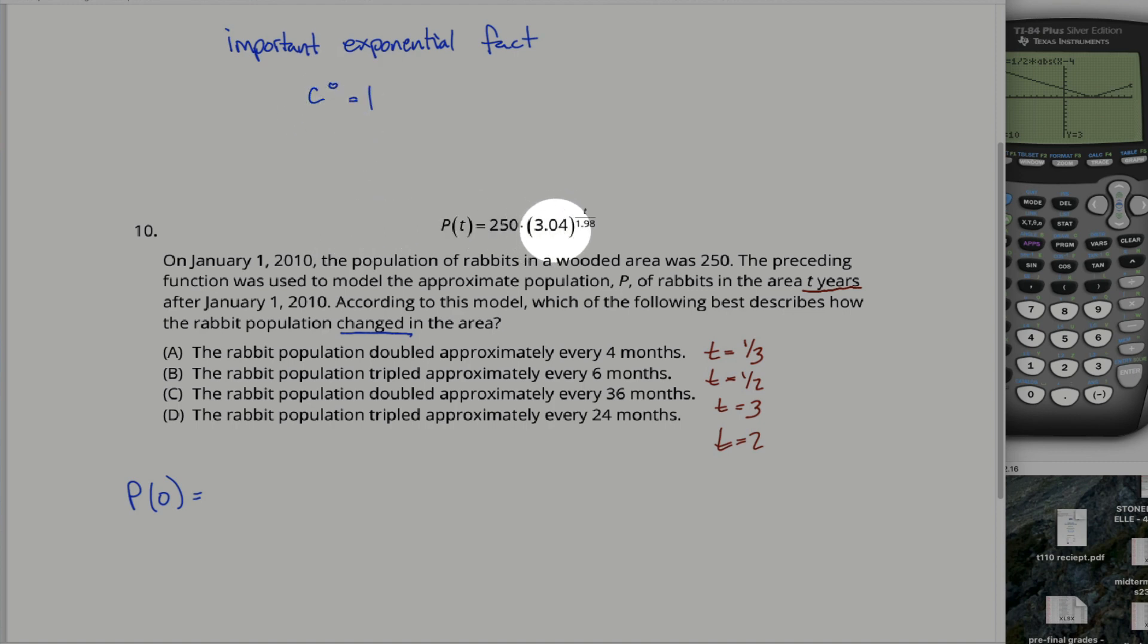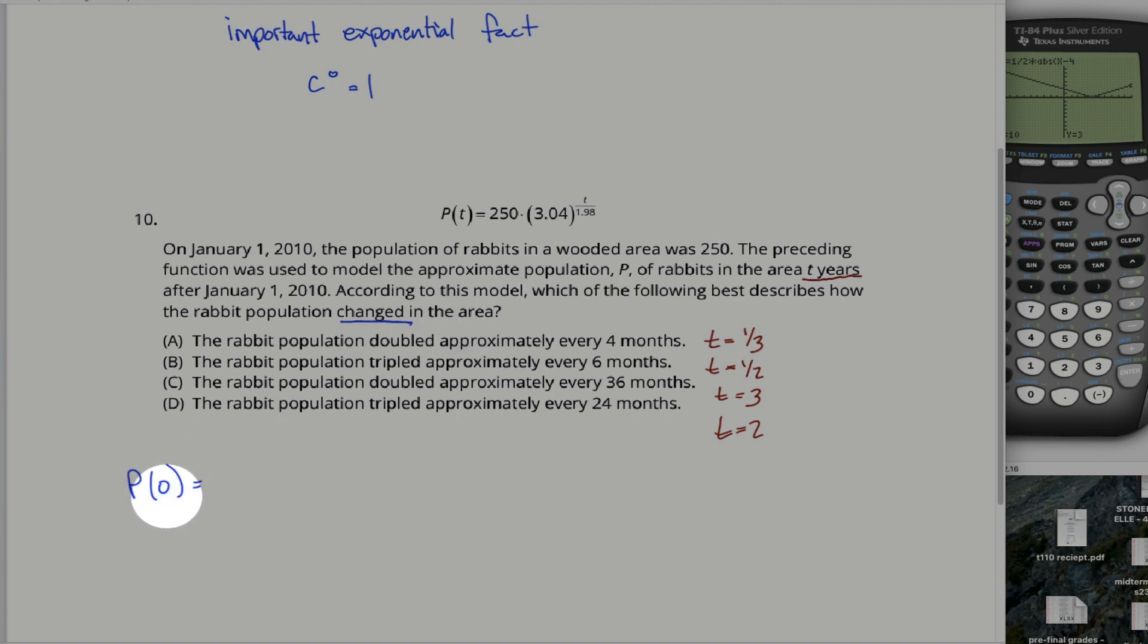So for example, 3.04 raised up to the zero power is equal to one. So when I talk about the population at time zero, it's just 250 times one. It's just 250. More generally, when you have exponential functions like this, your y-intercept, a.k.a. the initial amount, is given as part of the function.